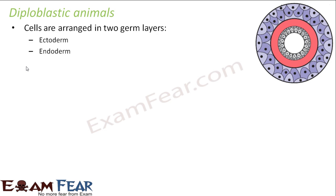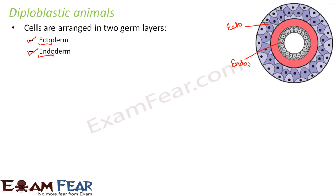In diploblastic animals, cells are arranged in two germ layers. The blastula gives rise to two germ layers: one is called ectoderm and the other is known as endoderm. 'Ecto' means outside and 'endo' means inside. The outside layer is ectoderm — shown as the purple-colored outer layer in the diagram — and the gray-colored inner layer is endoderm. Between the ectoderm and the endoderm, an undifferentiated mesoglia is present. In the diagram, the red-colored layer represents the mesoglia.